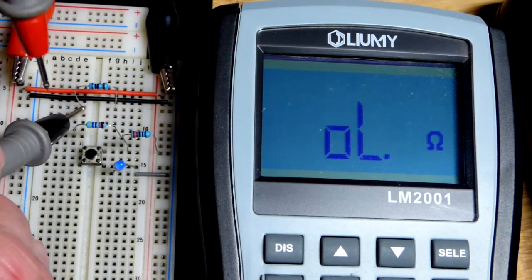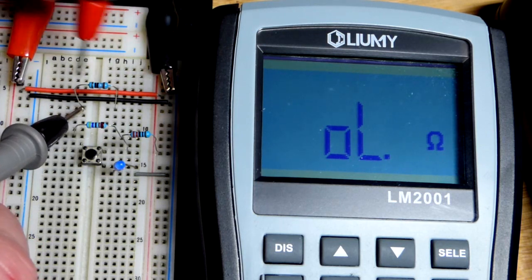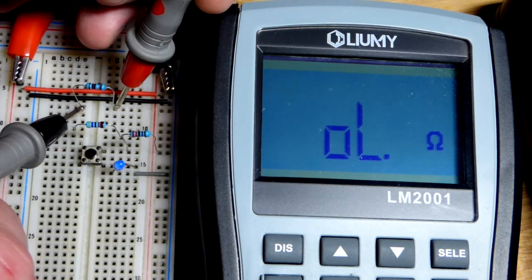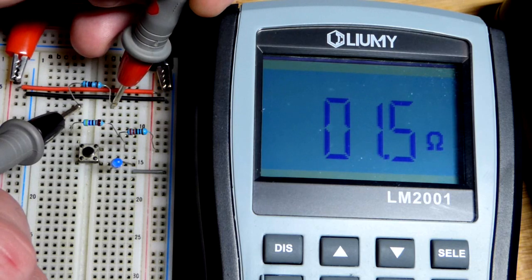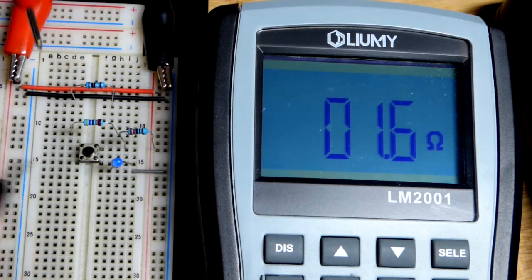For our first resistor, notice there's no power attached to it. Make sure there's no voltage across it because that could damage the meter. You can see it reads about 1.5 ohms. This is a low value resistor.